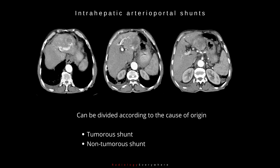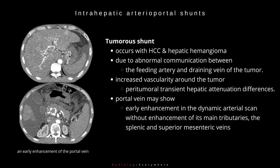Intrahepatic arterioportal shunts can be divided according to the cause of origin. Tumorous shunt: this occurs with hepatocellular carcinoma and to a lesser extent hepatic hemangioma. The transtumoral shunt is due to abnormal communication between the feeding artery and the draining vein of the tumor. This results in increased vascularity around the tumor, manifested as peritumoral transient hepatic attenuation differences. The portal vein may show early enhancement in the dynamic arterial scan without enhancement of its main tributaries, the splenic and superior mesenteric veins.